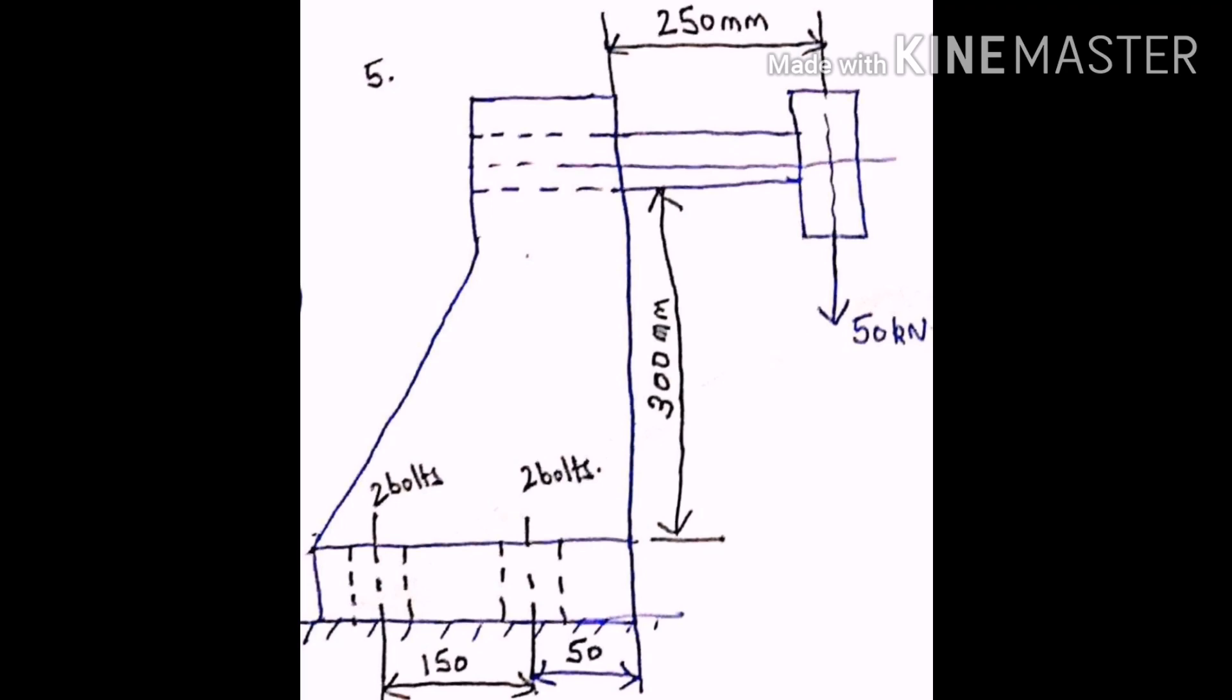Let us consider a case as shown in the given diagram. Here you can see the load of 50 kN is acting in the direction parallel to the axis of the bolts. The question is to determine the size of the bolt if permissible shear stress is 75 MPa. Assume all the bolts to be of the same size.